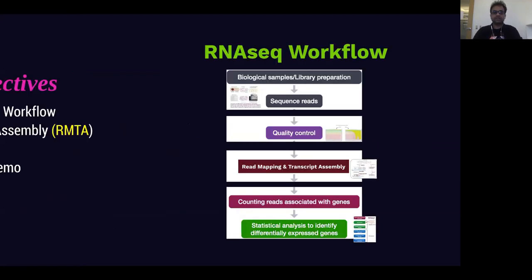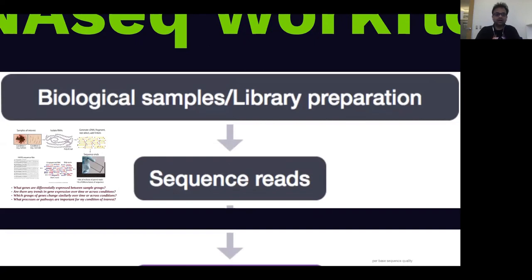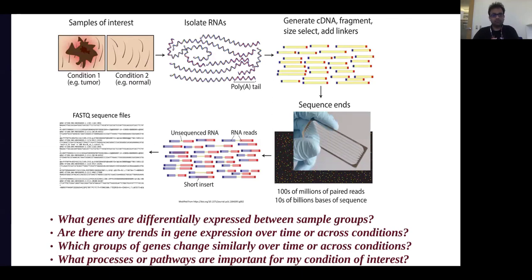For the overview of the RNA sequencing workflow, it starts off with identifying the study of biology that you want to address. The wet lab part of the experiment involves isolation of RNA, generation of cDNA fragments, and subsequently sequencing of the reads to generate FASTQ sequencing reads. Some of the questions that can be addressed with RNA sequencing are: what genes could be differentially expressed between sample groups? Are there any trends in gene expression over time or across conditions? Which groups of genes change similarly over time or across conditions? And what processes or pathways are important for conditions of interest?